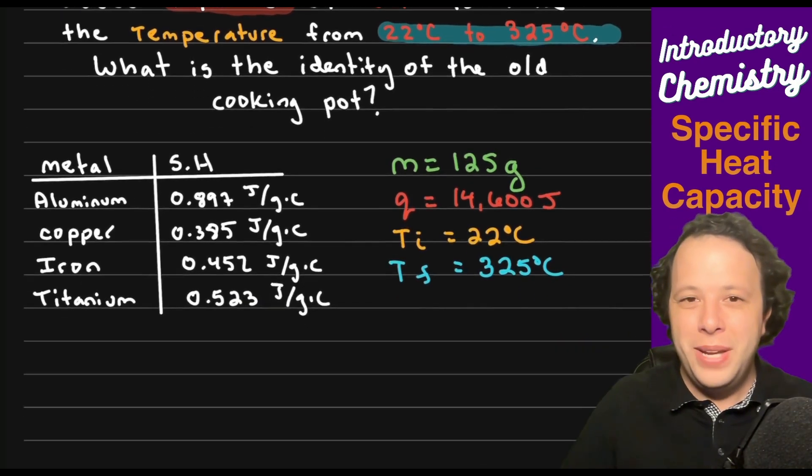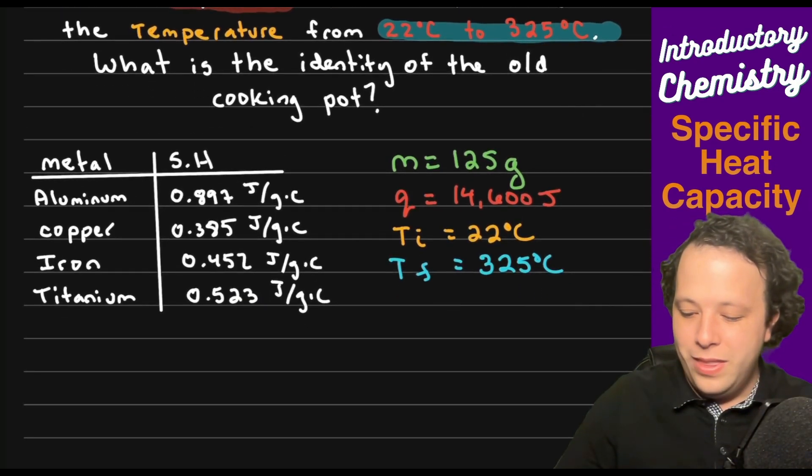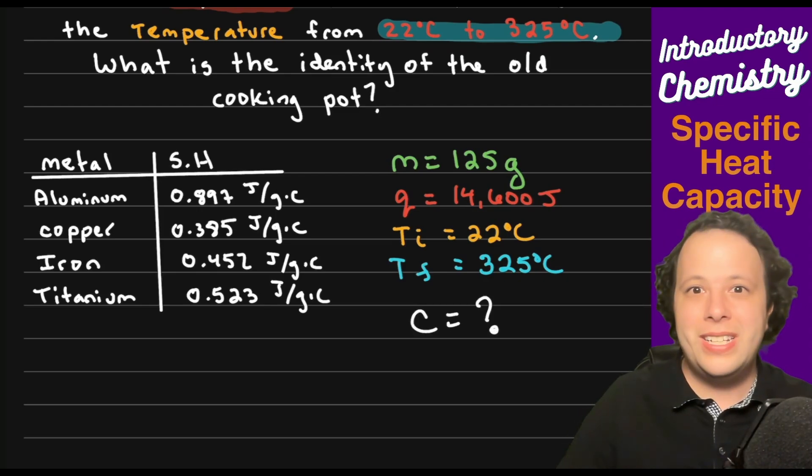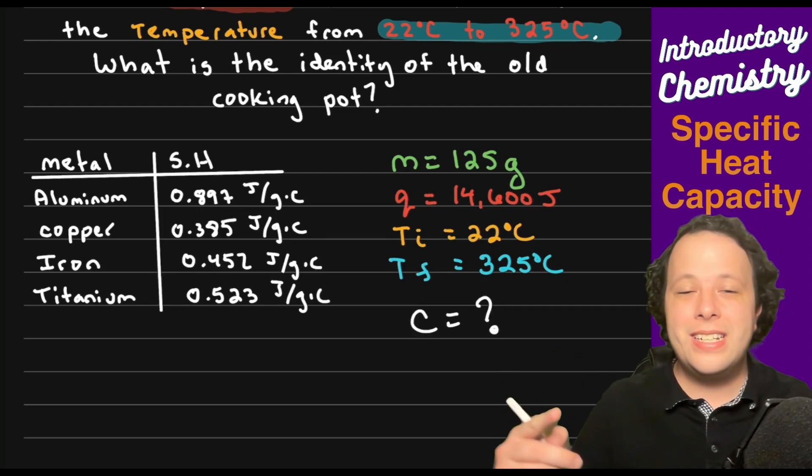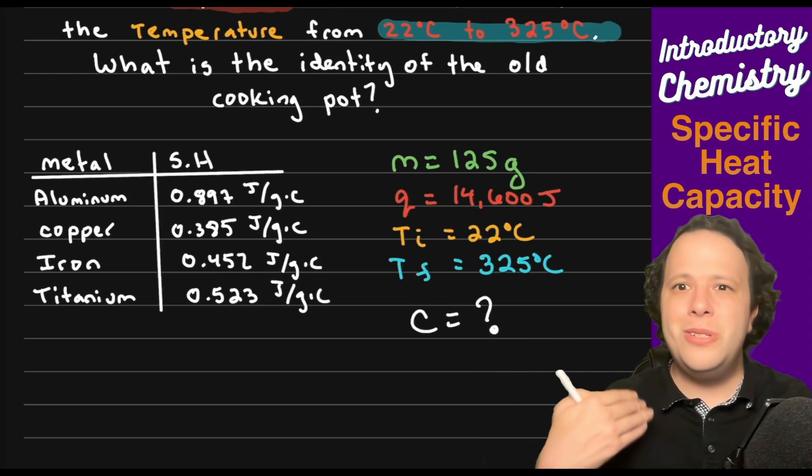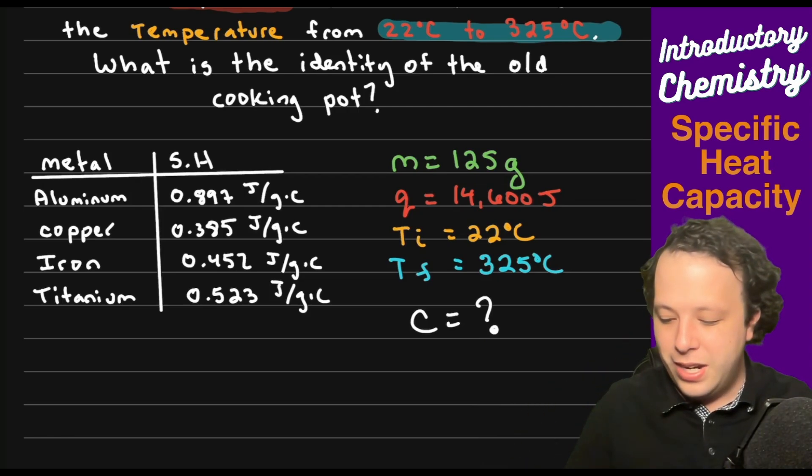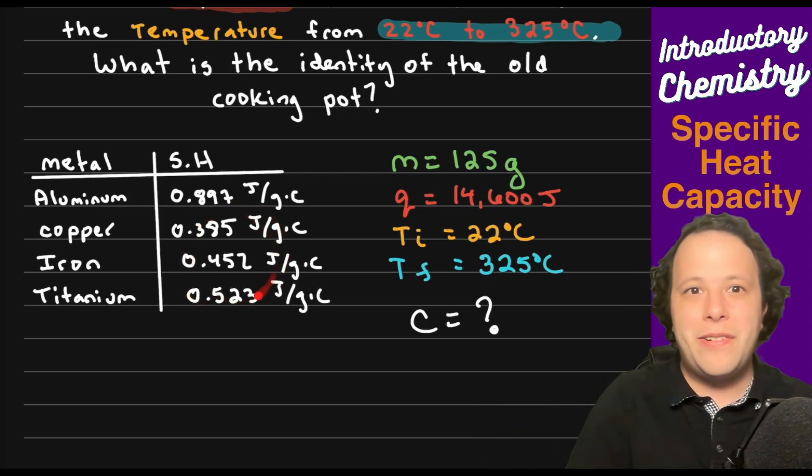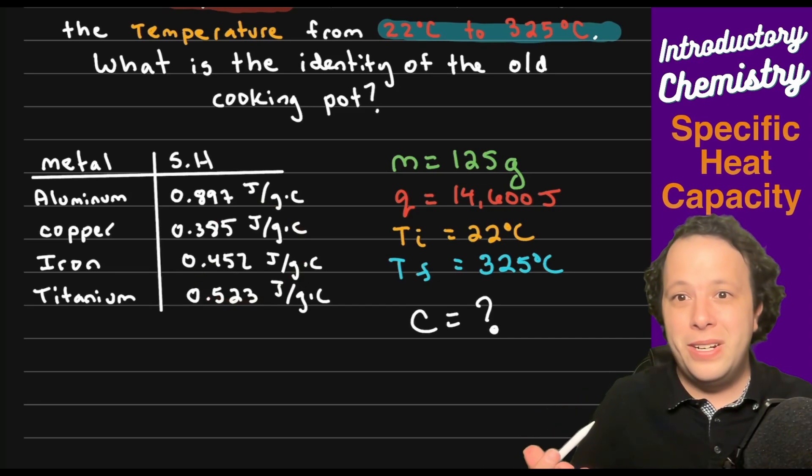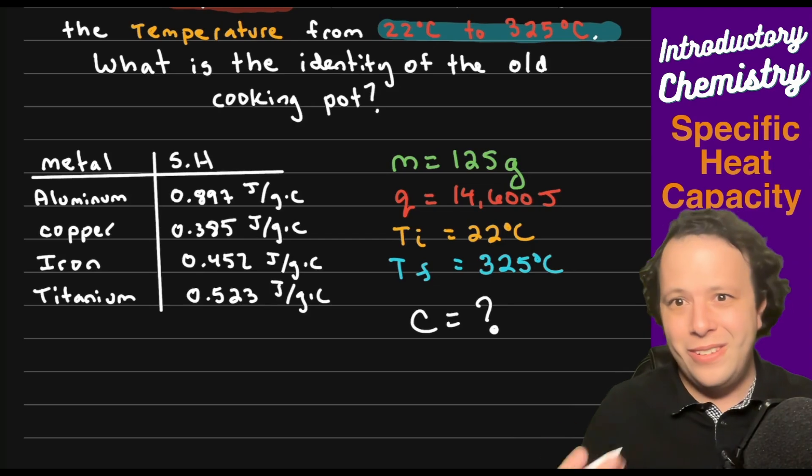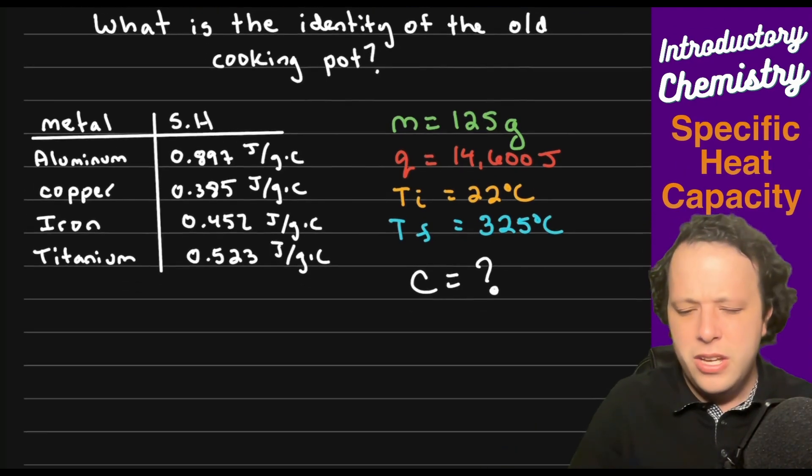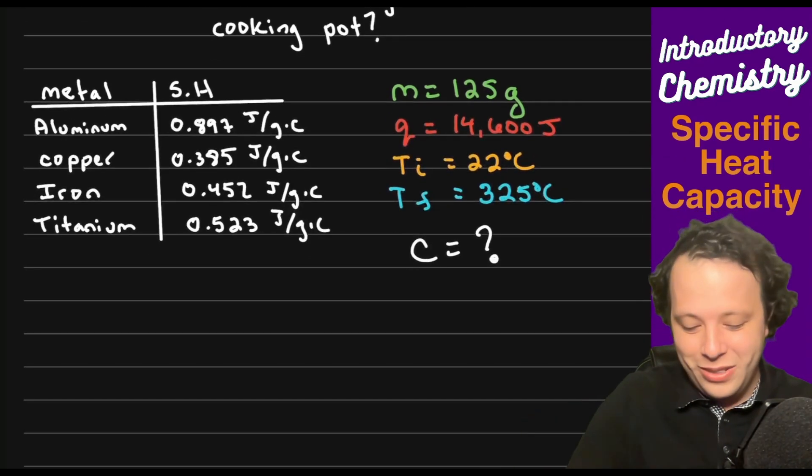The first thing that we see is that we have a mass of 125 grams. We have a heat value that is hidden in this problem as well, 14,600 joules, so that is a Q value. We have two temperature values, so we have a Ti of 22 degrees C and then we have a Tf of 325 degrees C. Now that we have all these different values, the one thing we got to see is what are we missing is our C value.